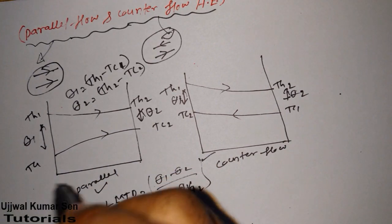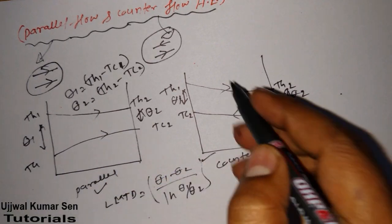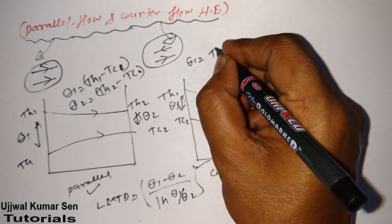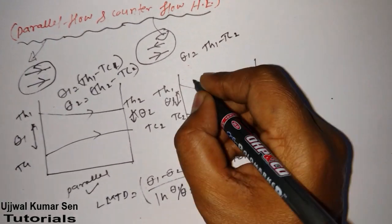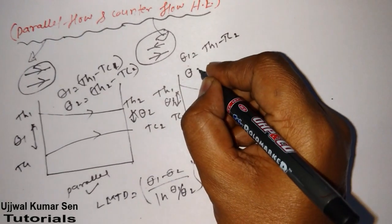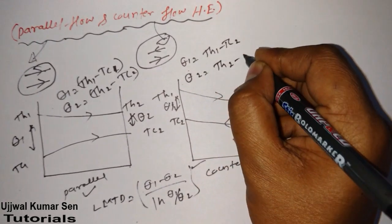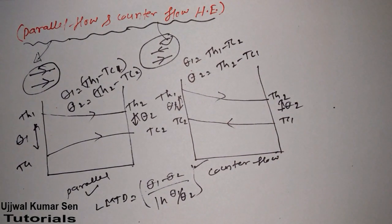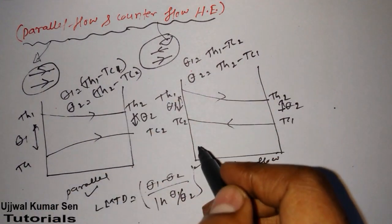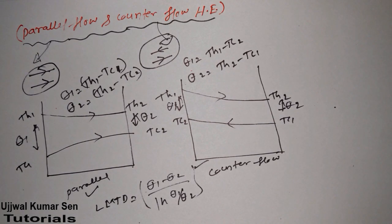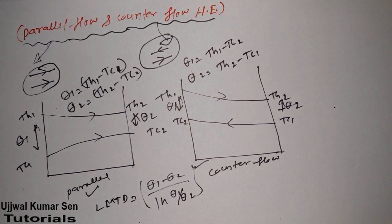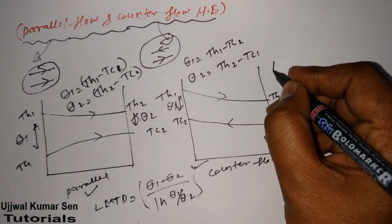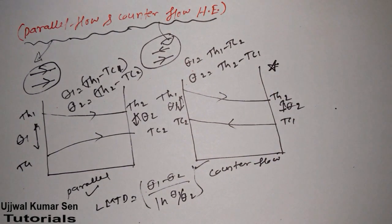For counter flow, the theta formulas change: θ1 = TH1 − TC2 and θ2 = TH2 − TC1. Using these formulas we can easily find LMTD for both parallel flow and counter flow heat exchangers.